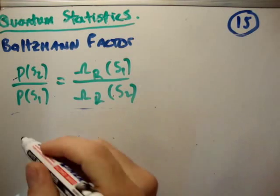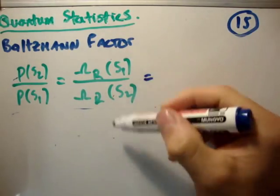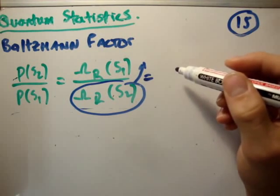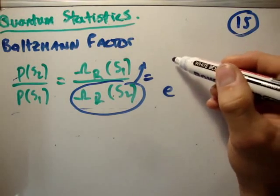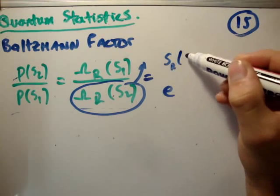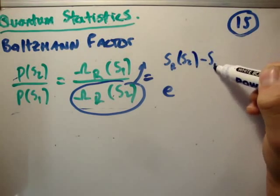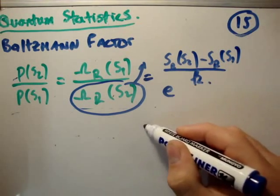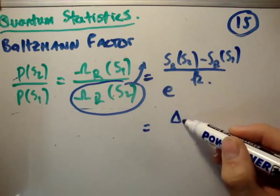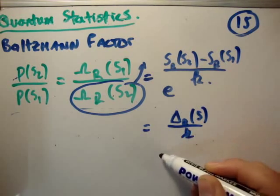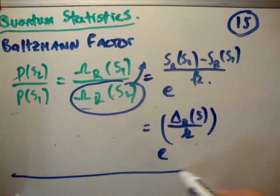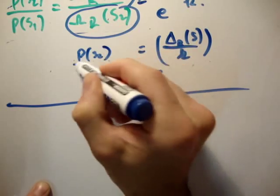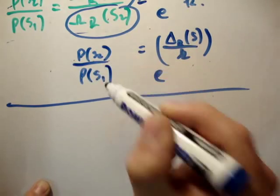Dividing by k and taking an exponential on both sides — since exponentials and natural logarithms are inverse functions — allows us to rewrite the equation in terms of exponentials of entropy divided by Boltzmann's constant. So we get e to the power of (S_reservoir(S2) minus S_reservoir(S1)) divided by k, which we can write as e to the delta S_reservoir over k, and that equals P(S2) divided by P(S1).